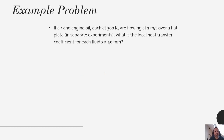Our next example problem: again the same scenario — if air and engine oil each at 300 Kelvin are flowing at 1 meter per second over a flat plate, what is the local heat transfer coefficient for each fluid? Our procedure is to first evaluate the geometry — this is a flat plate under isothermal conditions — find the appropriate correlation to give us our Nusselt number, calculate the Nusselt number, and then back-solve for the convective heat transfer coefficient.